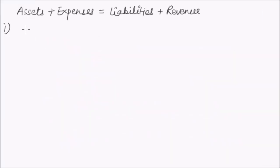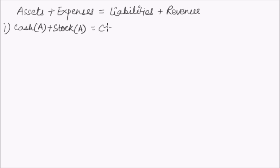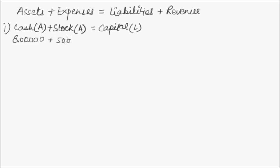Now we'll make the equation. Cash, which is an asset, and stock — also an asset, also called inventory — equal capital, which is part of the liability side. The amount of cash was 8 lakhs and stock 50,000, so the total capital becomes 8 lakhs 50,000.